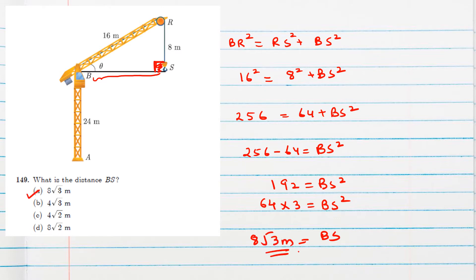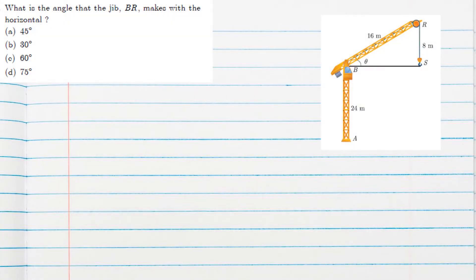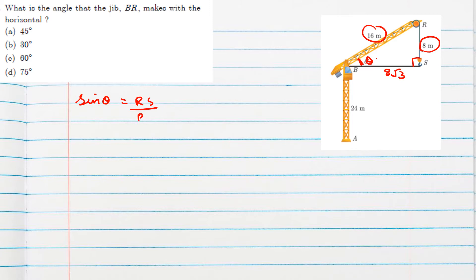So the first option is the correct answer for question 1. For question 2, we need to find the angle theta that the jib BR makes with the horizontal. We use sine theta, where sine theta equals the opposite over the hypotenuse, which is RS over BR.